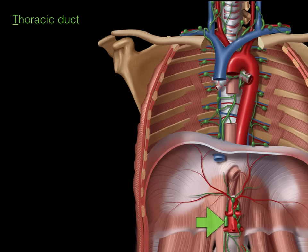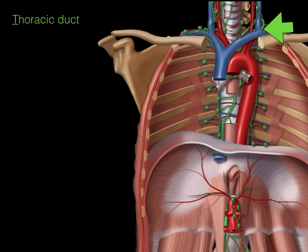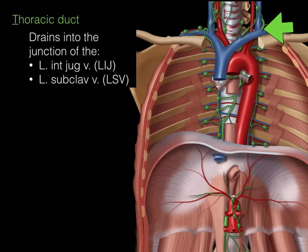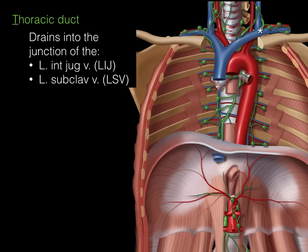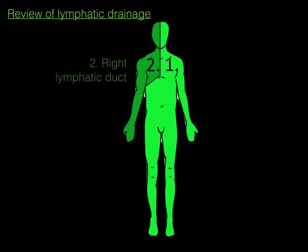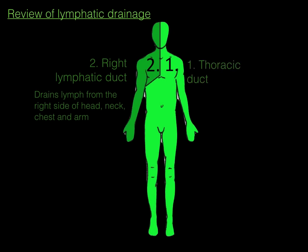The thoracic duct, coming from the cisternal chyli through the posterior mediastinum, drains in the superior mediastinum at the junction of the left internal jugular vein and the left subclavian vein. For review: the right lymphatic duct drains lymph from the right side of the head and neck, as well as the right chest and arm. The thoracic duct drains everything else — lymph from the rest of the body.